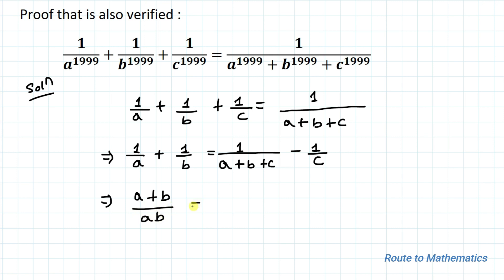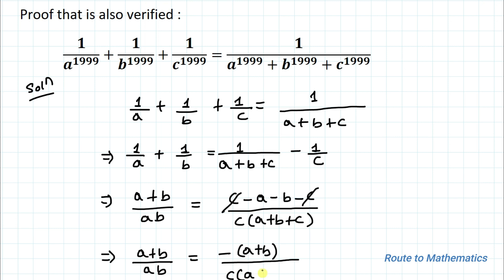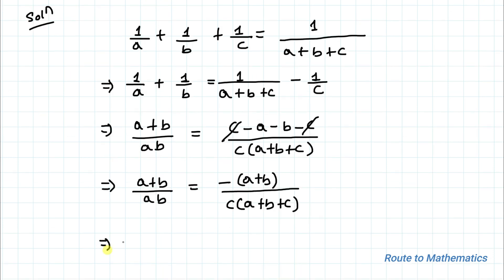So we have (a+b)/(ab) = (c - a - b - c) / (c(a+b+c)). Taking minus common, we get (a+b)/ab = -(a+b) / (c(a+b+c)). Taking all terms to the right-hand side, we have (a+b)/ab + (a+b)/(c(a+b+c)) = 0.